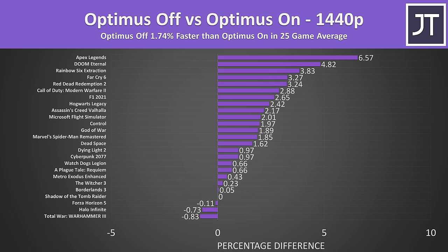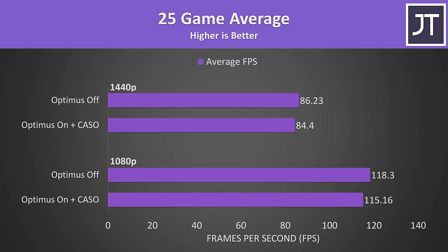There's an even smaller difference at the higher 1440p resolution, because the MUX switch generally matters less at higher GPU-bound resolutions. That said, the games hitting the highest frame rates saw the biggest uplift from turning Optimus off. If we take the average of all 25 games tested, Optimus off is ahead, but only by a super small margin — in most cases it's just not a difference you're actually going to notice while playing.